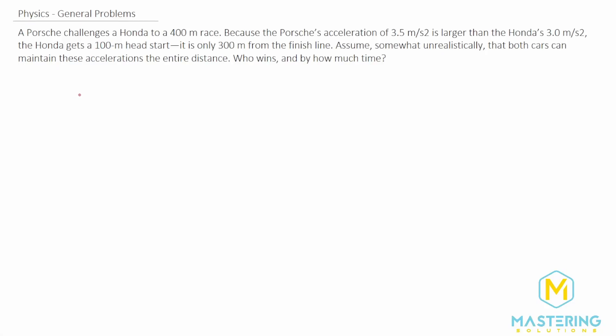Welcome to Mastering Solutions. In this general problem we have two cars, a Porsche and a Honda, and they're going to race in a 400 meter race. The Porsche's acceleration is faster at 3.5 meters per second squared, and the Honda only has an acceleration of 3 meters per second squared.